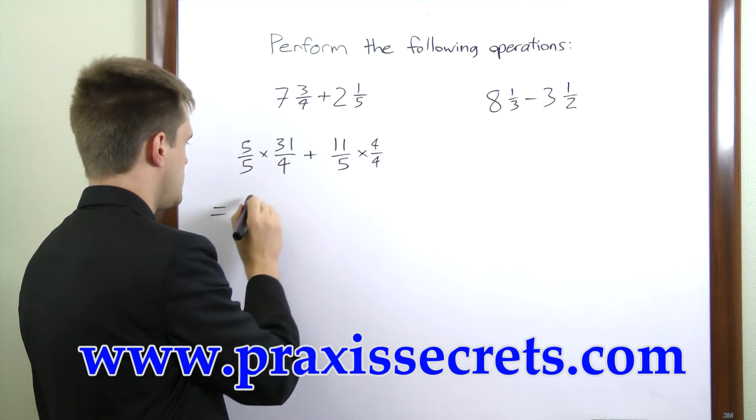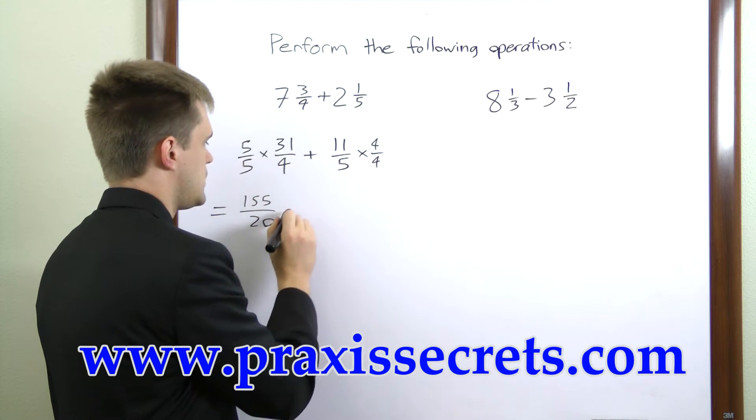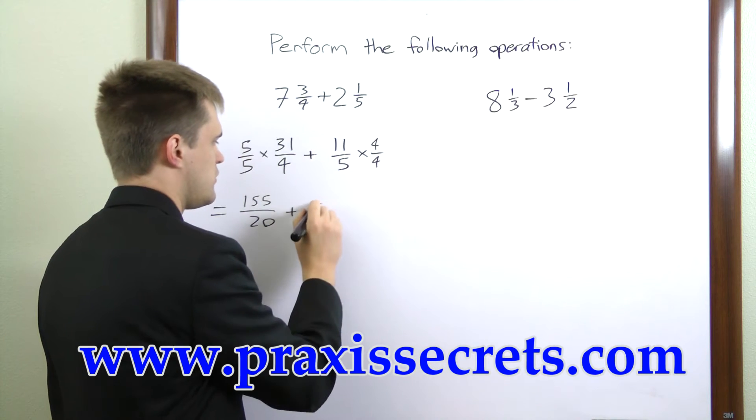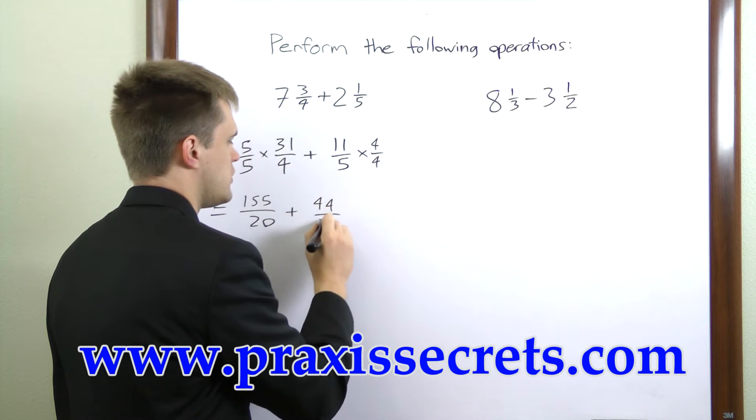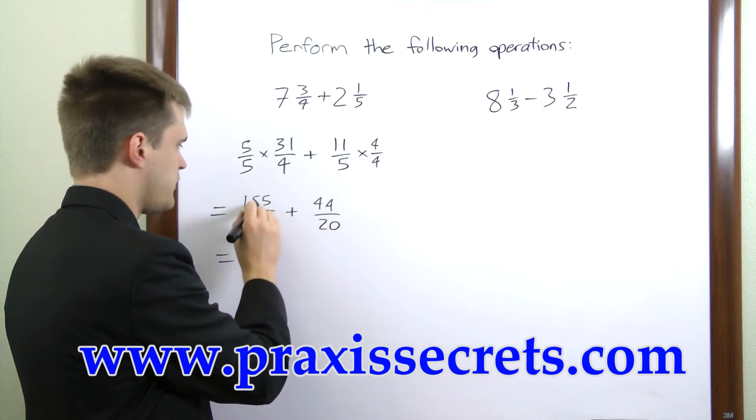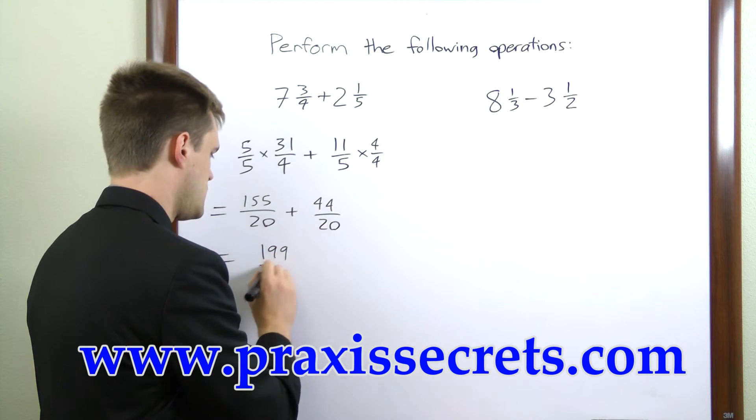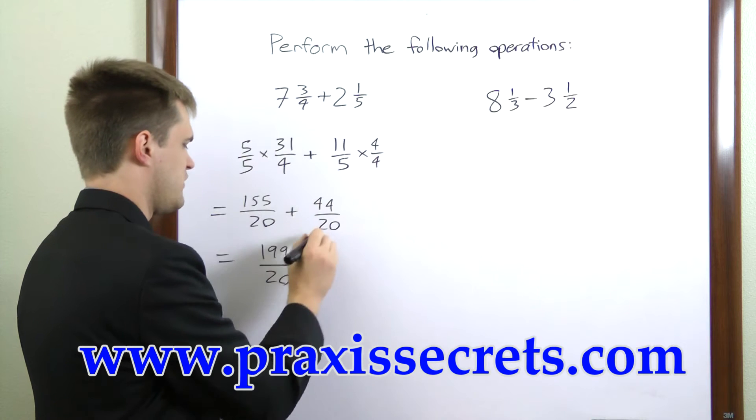Multiplying this you get 155 over 20 plus 44 over 20. 155 plus 44 is 199 and we keep the same denominator of 20.